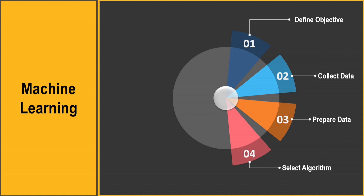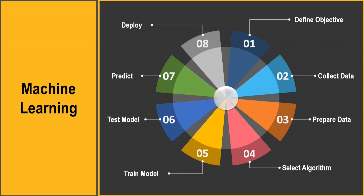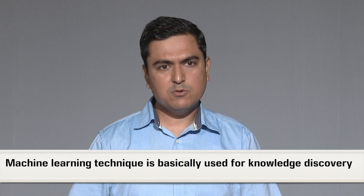After selecting the algorithm and preparing the data, we train the model using the collected data. A portion of the data is kept aside for testing. Once tested, we predict the output to verify the model is working correctly. If prediction is successful, we deploy the machine learning model to the real field to solve the problem.